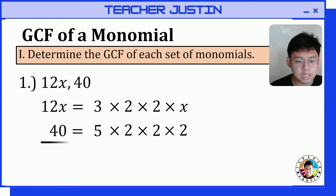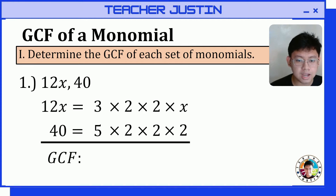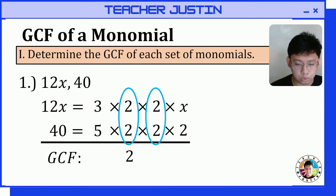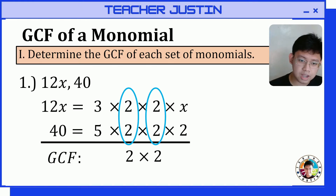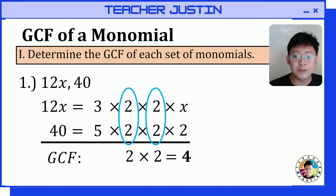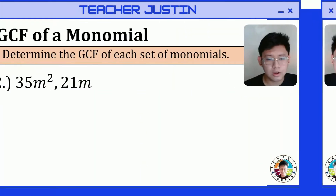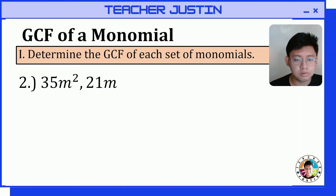After getting the prime factors of our monomials, let's get the common factors. The common factors are 2 and 2, so let's multiply them: 2 times 2. That gives us the greatest common factor, which is equal to 4.